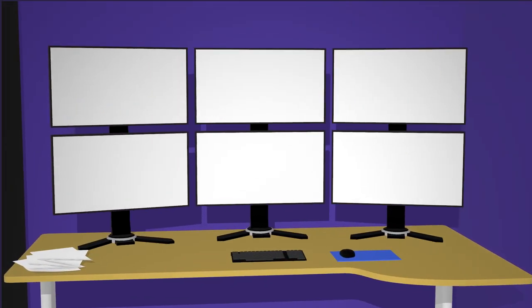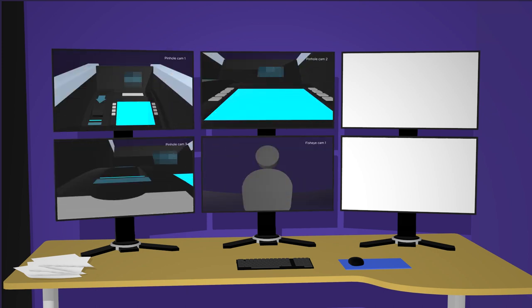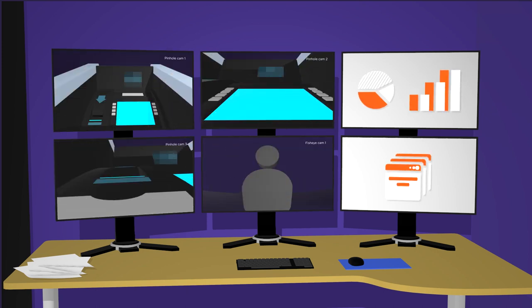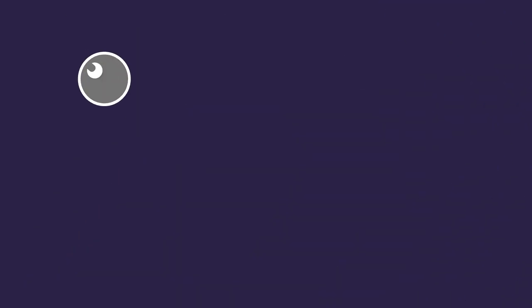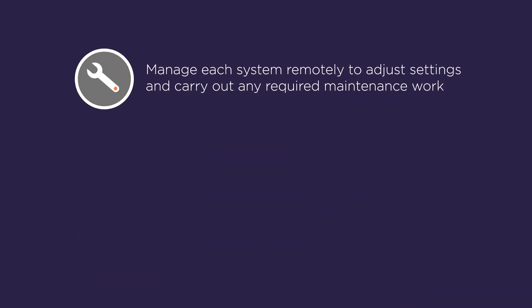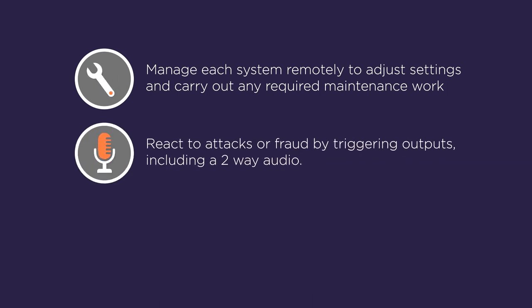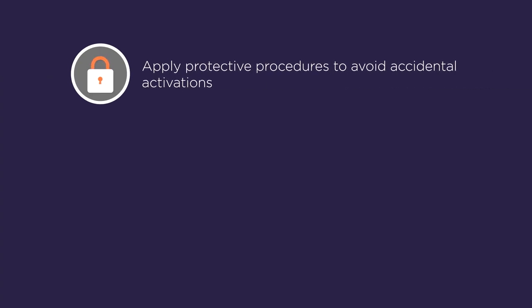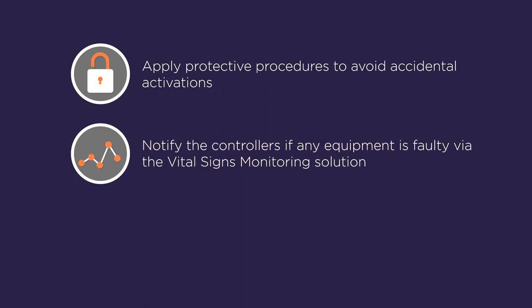The monitoring solution: the control room will have the ability to view live camera images from any ATM on demand, receive live pop-up images, emails and audible alarms in the event of an attack or fraud, manage each system remotely to adjust settings and carry out any required maintenance work, react to attacks or fraud by triggering outputs including two-way audio, and request police attendance.